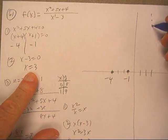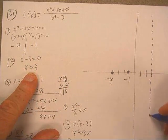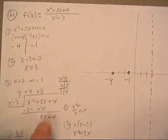One, two, three. Vertical asymptote there. Slant asymptote.